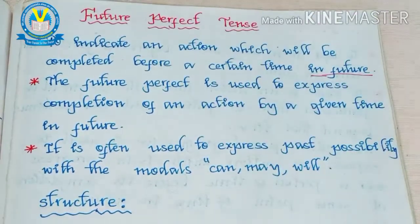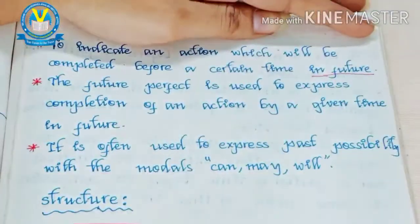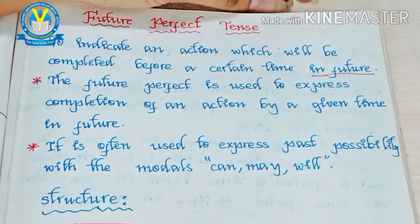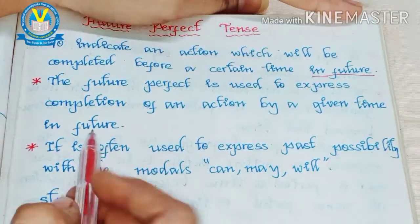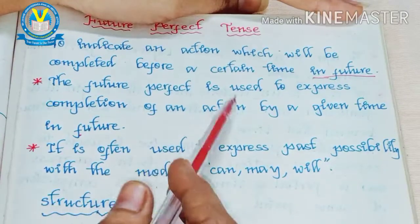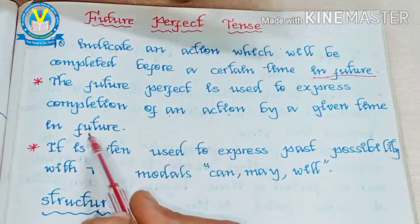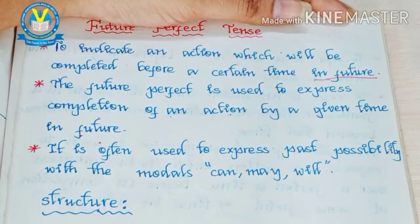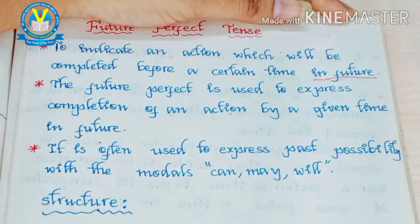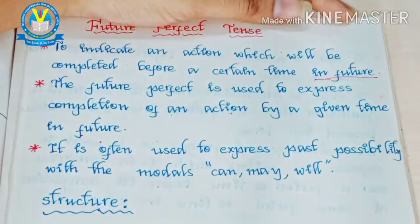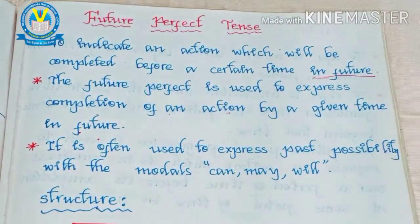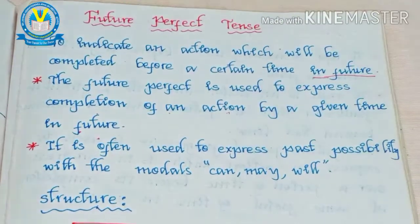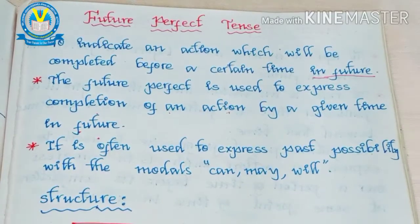The future perfect tense is used to express completion of an action by a given time in the future. For example, if I am going to conduct a test, I will give a specific time — say 5 to 6 or 4 to 5. In that way, I know that the action will take place in the future at a particular time.